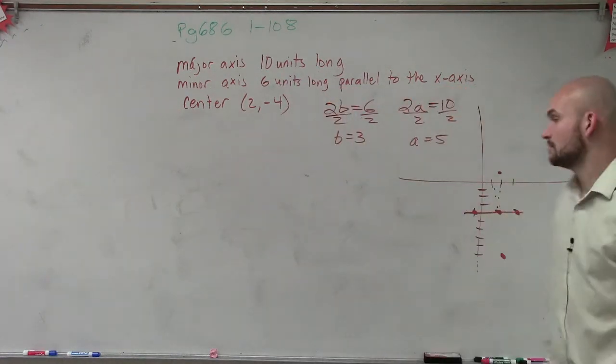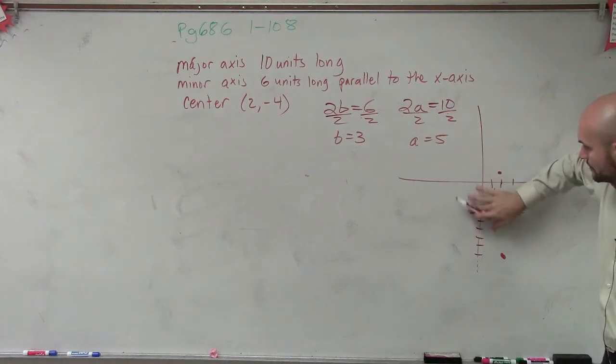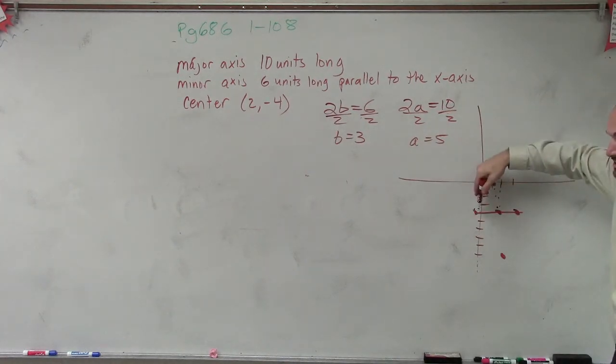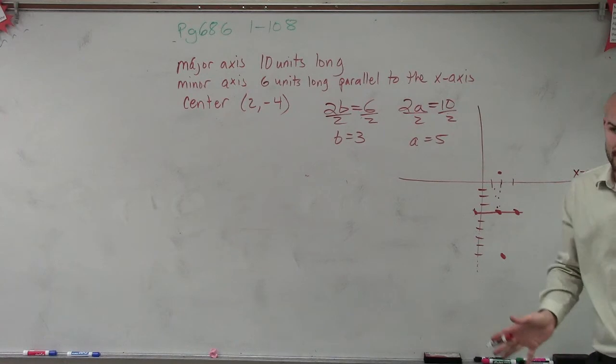How did you know the vertical number? Because it says the minor axis is parallel with the x-axis. So since it's parallel, we know that the minor axis is horizontal. That means the major axis is vertical.